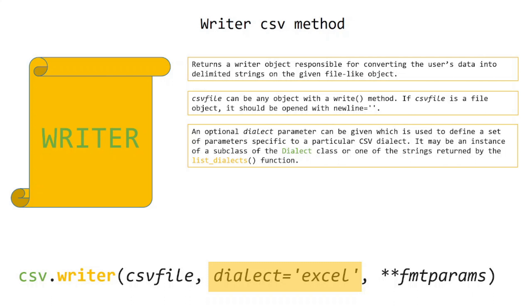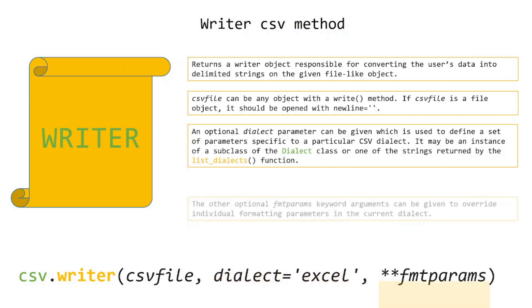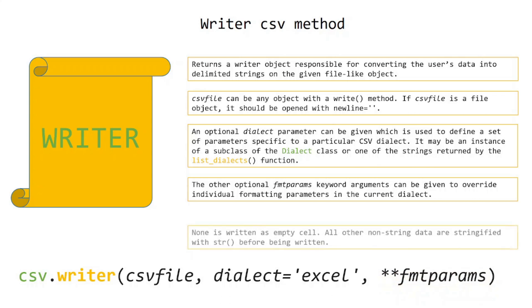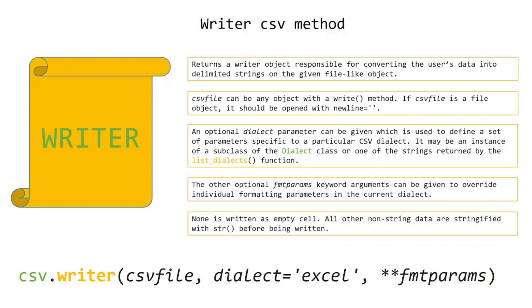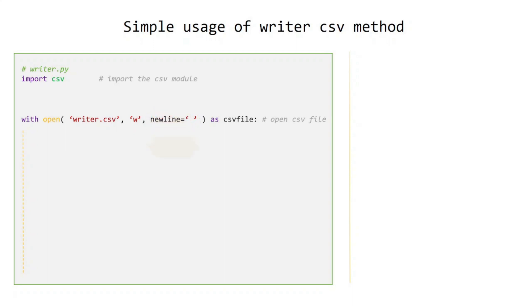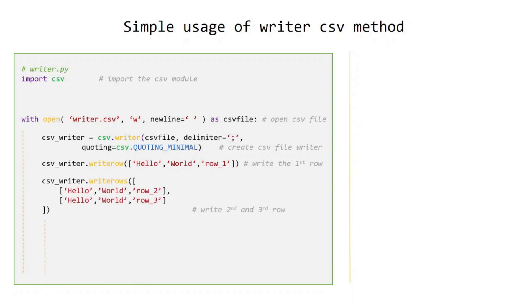Other optional fmt_params keyword arguments can be given to override individual formatting parameters in the current dialect. None is written as an empty cell; all other non-string data are stringified with the str() function before being written. Simple usage of csv.writer(): import the CSV module, open the CSV file in write mode, remember to open with newline as empty string, create a CSV file writer object, write the first row, then write the second and third rows with the writerows() method.